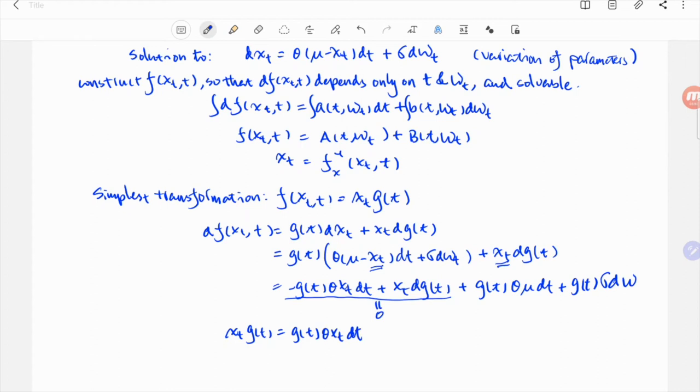Setting this to zero, removing x, sorry I forgot dg_t here. Now we can solve this non-stochastic SDE of g_t pretty easily. And the solution is g_t equals e to the theta t.